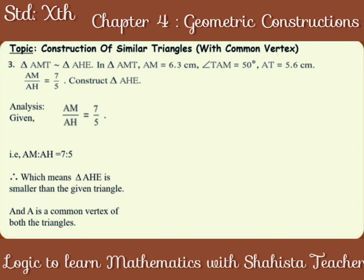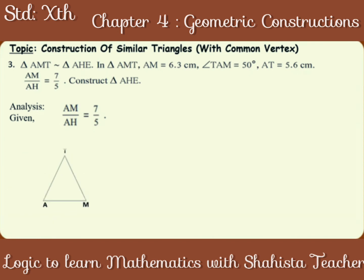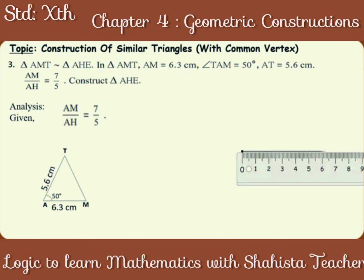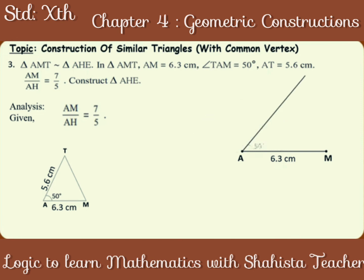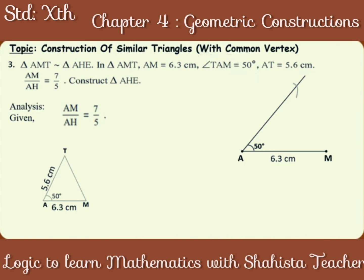Construction. Draw a rough figure of triangle AMT and mark AM is equal to 6.3 cm, angle TAM is equal to 50 degrees, and AT is equal to 5.6 cm. Construct triangle AMT. Draw segment AM of measurement 6.3 cm. Use the protractor to draw an angle of 50 degrees at vertex A. Take a measurement of 5.6 cm on compass and construct an arc from point A. Name the intersection point as T.